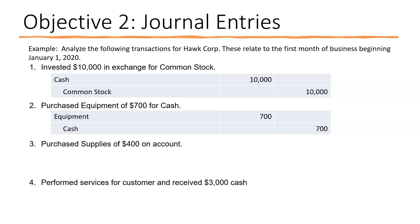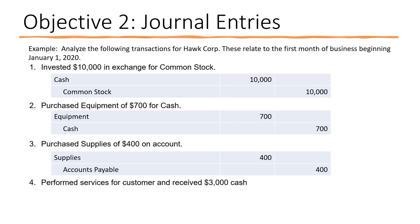Transaction three: purchased supplies of $400 on account. Supplies is an asset account, so we debit supplies $400. The credit goes to accounts payable $400 — a liability account — because we're going to pay for it later. We show in accounts payable that we owe a supplier that much money.